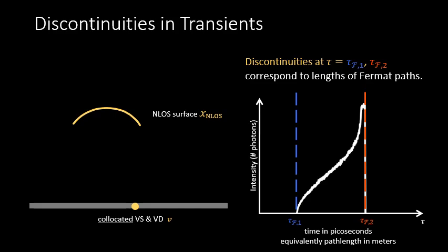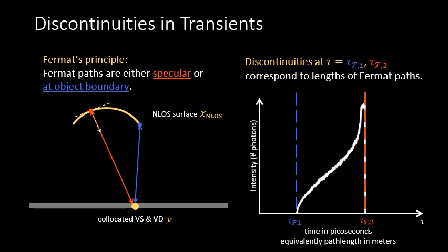That is, paths that are locally shortest or locally longest. We can additionally prove that these Fermat paths will be of one of two kinds. The first kind are specular paths, meaning that they connect the virtual source to a point on the non-line-of-sight surface such that this connection is parallel to the surface normal at that point.